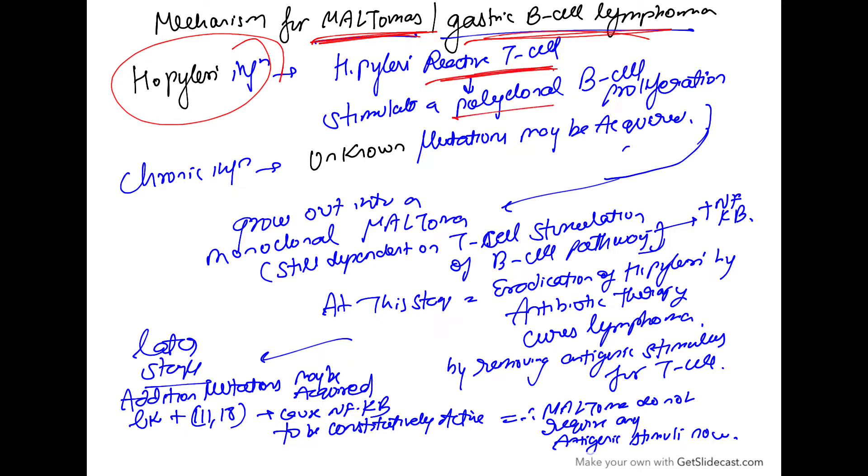we know T cells stimulate a polyclonal B cell proliferation. Now, with chronic infection, there will be unknown mutations which will be acquired. So, now this polyclonal B cell will convert into a monoclonal MALToma.